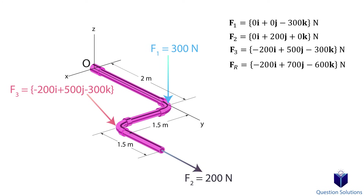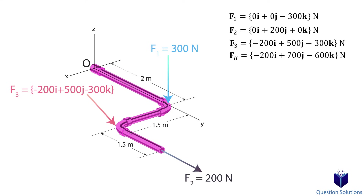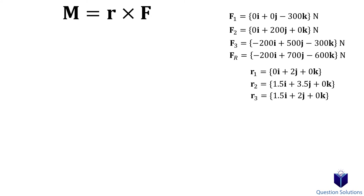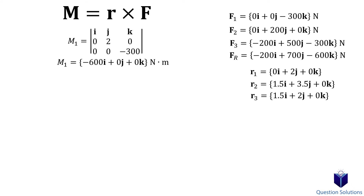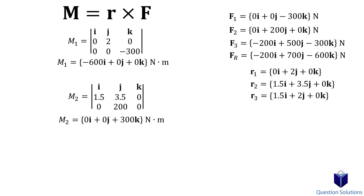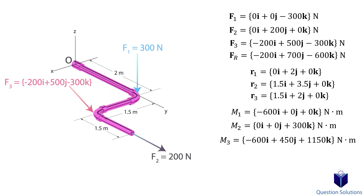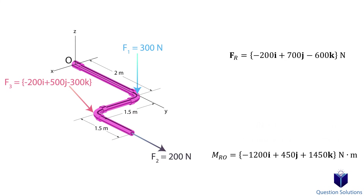Next we look at the moments created about point O by each force. For F1, we need a position vector from O to where force 1 is applied. For F2, a position vector from O to where force 2 is applied. For F3, a position vector from O to where force 3 is applied. We find the moment by taking the cross product for each force. To find the resultant moment, we add them all up — just like when we found the resultant force — and that's our answer.